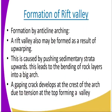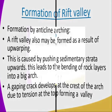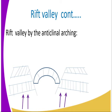We have the third theory — formation by the anticlinal arching theory. A rift valley may also be formed as a result of upwarping. This is caused by pushing sedimentary strata upwards, which leads to the bending of rock layers into a big arc. A gaping crack then develops at the crest of the arc due to tension at the top, forming a valley. Those are the three theories that explain how a rift valley is formed.